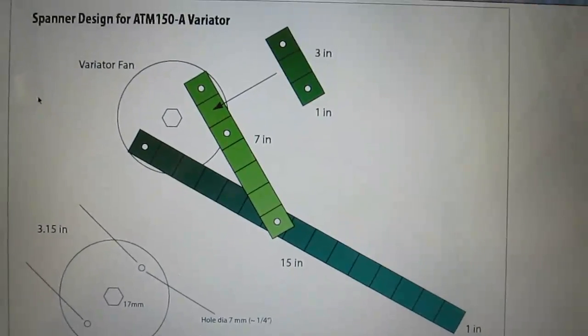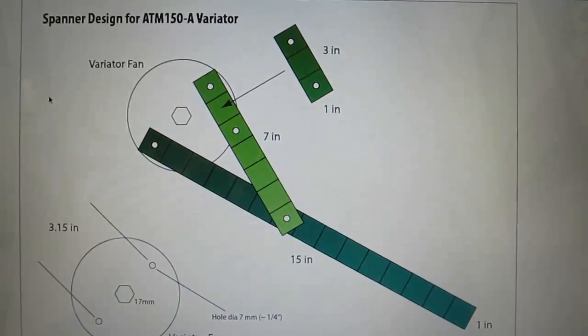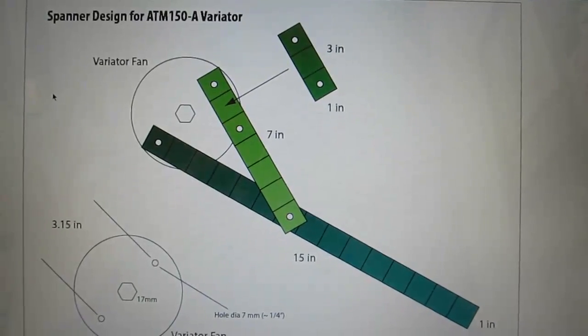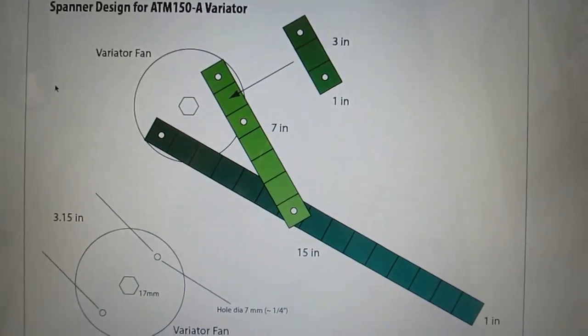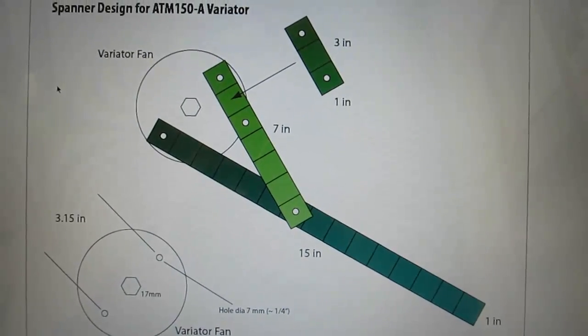And here's what the design of the spanner looks like. It's 1 inch steel tubing perforated, so you don't have to drill holes in it. There are three pieces, one 15 inches long, one 7 inches, and one 3 inches long.